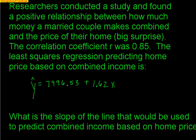The correlation coefficient, R, was 0.85. The least-squares regression line predicting home price based on the combined income is y-hat equals 7,996.53 plus 1.62x. So first off, let's make sure we understand we're trying to predict home price. So y-hat is home price in dollars, and the x variable here is the income of the married couple.